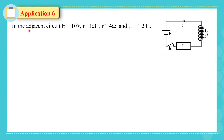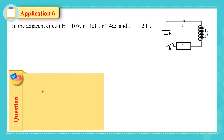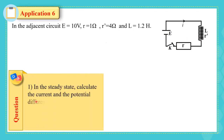Let's solve Application 6. In the adjacent circuit: E = 10 V, R = 1 Ω, R' (resistance of the coil) = 4 Ω, and L (inductance of the coil) = 1.2 H. In the steady state, calculate the current and the potential difference across the coil.